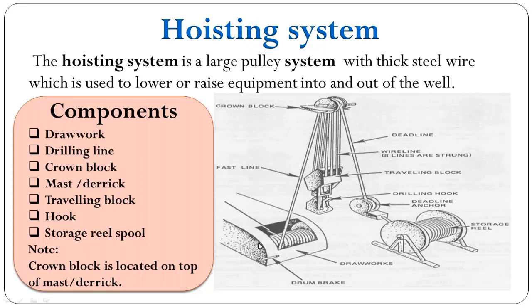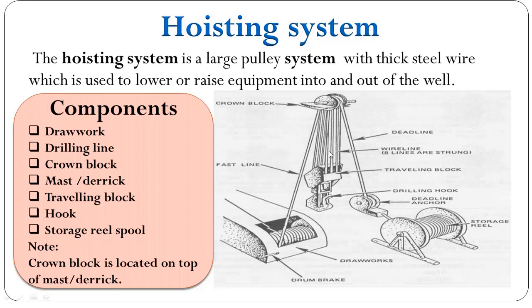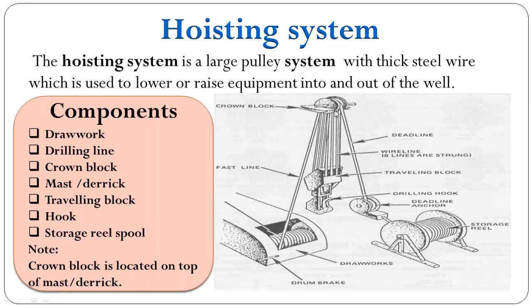This is the diagram for the hoisting system. The structure is called the tower or mast. This component is the drilling line. This component is called the traveling block, and below the traveling block is the hook. This is the crown block, which has a number of sheaves on it, and the traveling block also has a number of sheaves located on it.